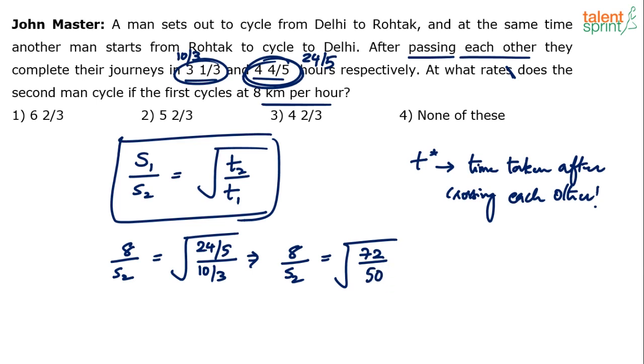That simplifies to 36/25, which equals 6/5.